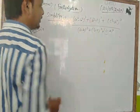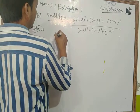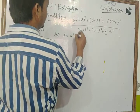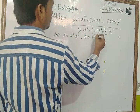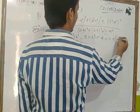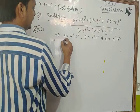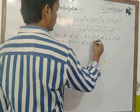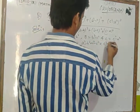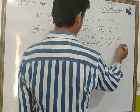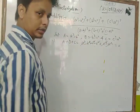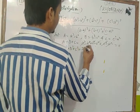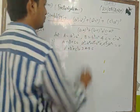For the numerator, let A = a² - b², B = b² - c², and C = c² - a². If we find A + B + C, we get a² - b² + b² - c² + c² - a², and all terms cancel each other, giving 0. Since A + B + C = 0, we can write A³ + B³ + C³ = 3ABC.